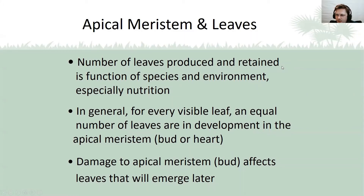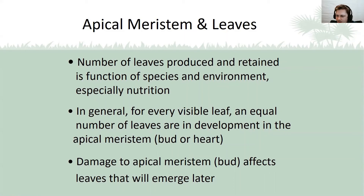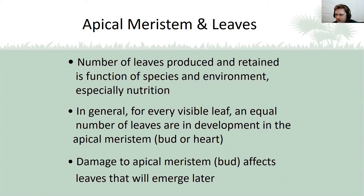The number of leaves produced and retained is typically a function of the palm species and the environment, especially nutrition. In general, for every visible leaf, there's an equal number of leaves in development in the apical meristem. If you damage the apical meristem, you're affecting the leaves that have yet to emerge. Also, removing visible leaves by pruning removes a source of nutrition for leaves that are in development. A new leaf will live for at least two years, usually longer, depending on the palm species and nutritional health. For example, a healthy coconut palm in southern Florida will produce one leaf every five weeks, but in central Florida, especially during colder months, that interval would be longer.